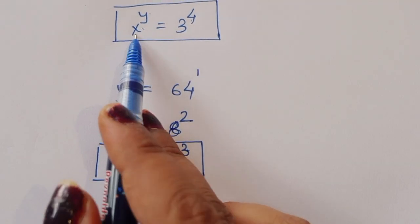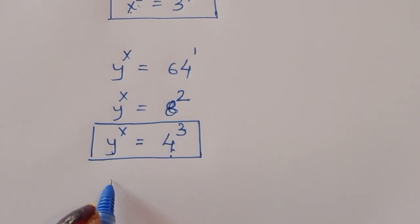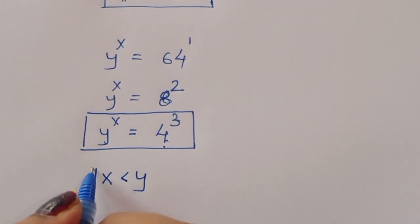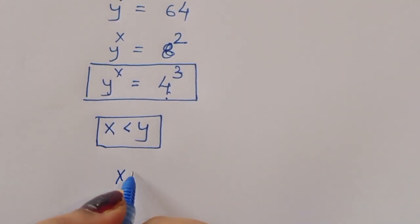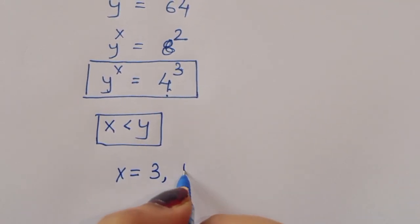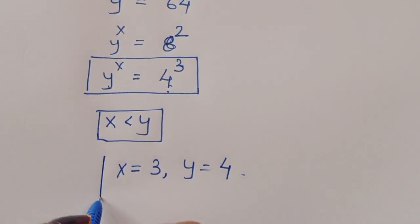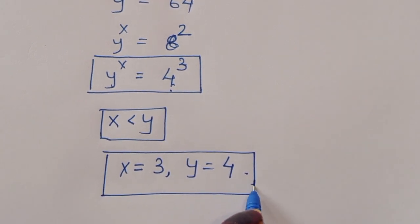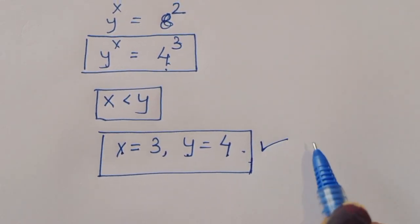Since x is smaller than y, the smallest value corresponds to x. Therefore x is equal to 3 and y is equal to 4. This is the solution.